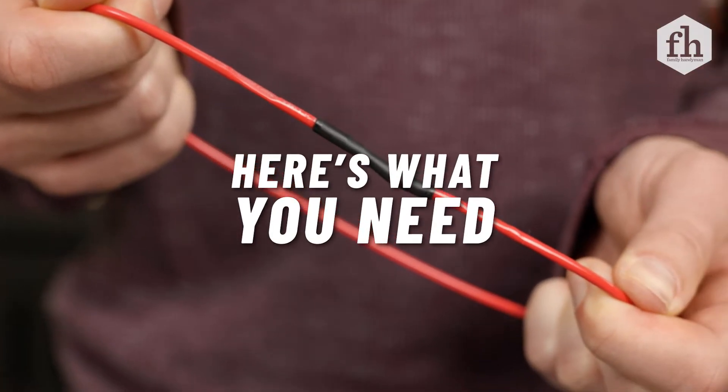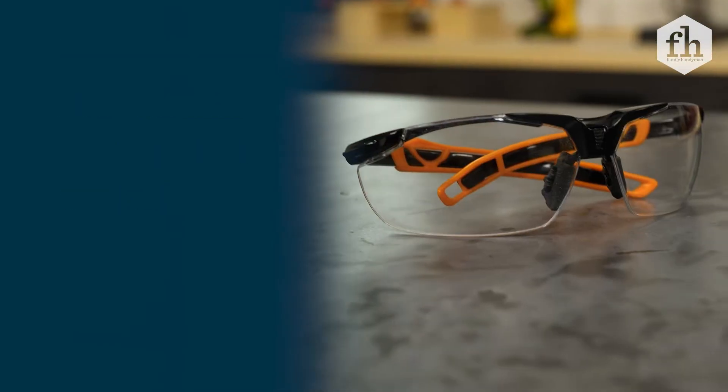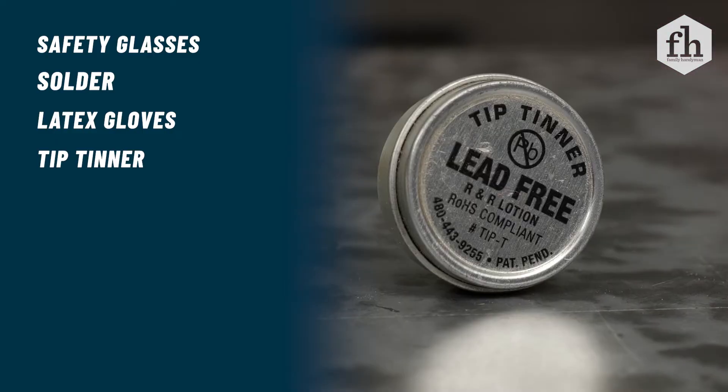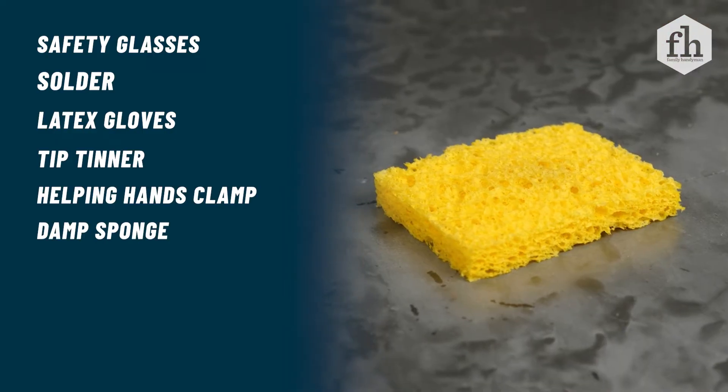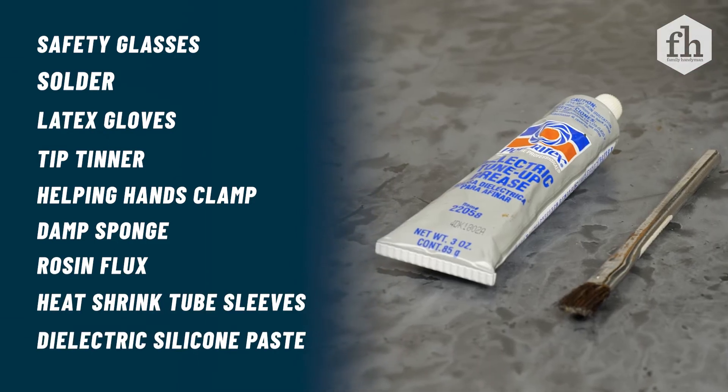The tools required for this project are a soldering gun, wire strippers, and a heat gun. You will also need safety glasses, solder, latex gloves, tip tinner, helping hands clamp, damp sponge, rosin flux, heat shrink tube sleeves, and dielectric silicone paste.